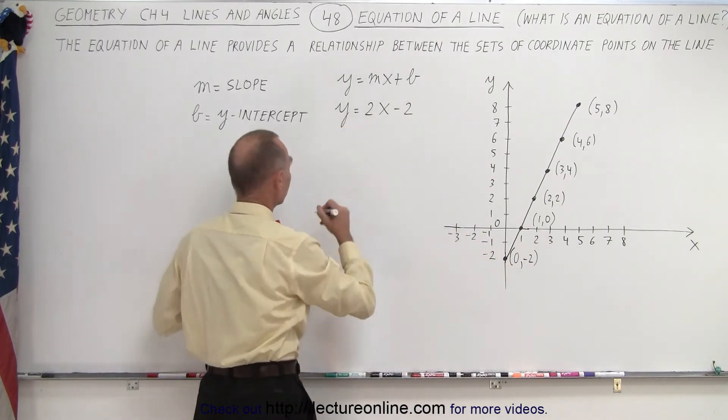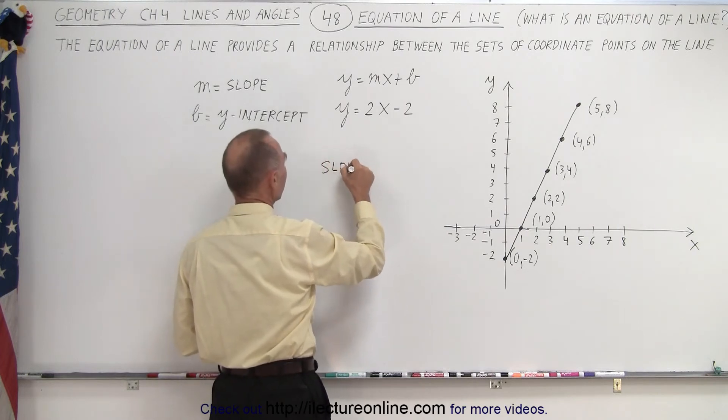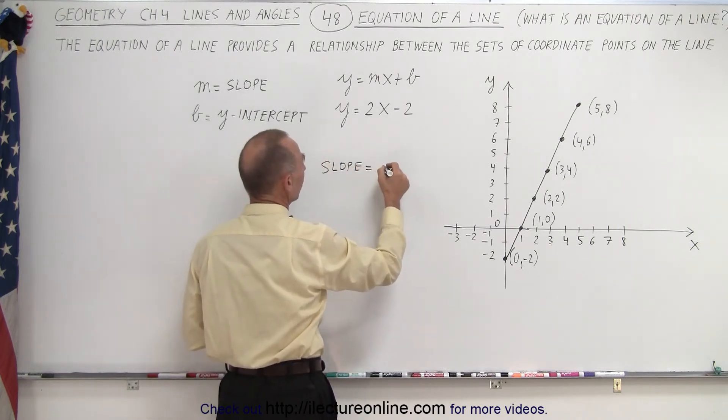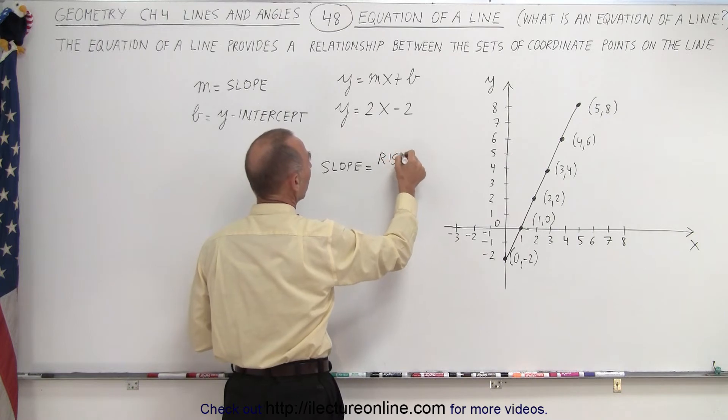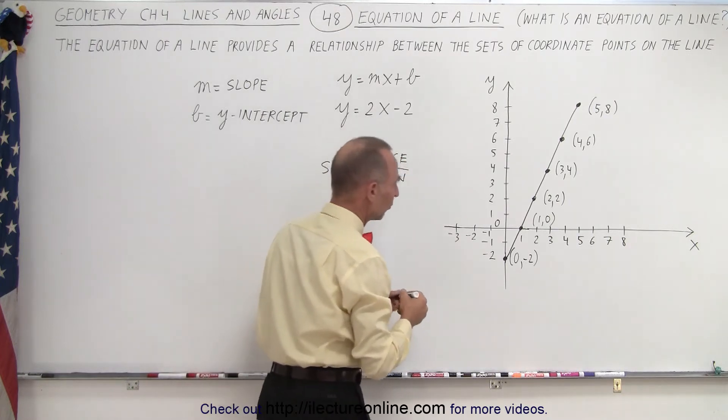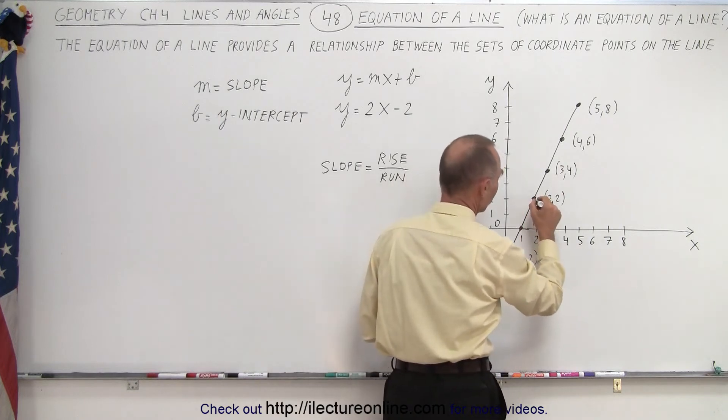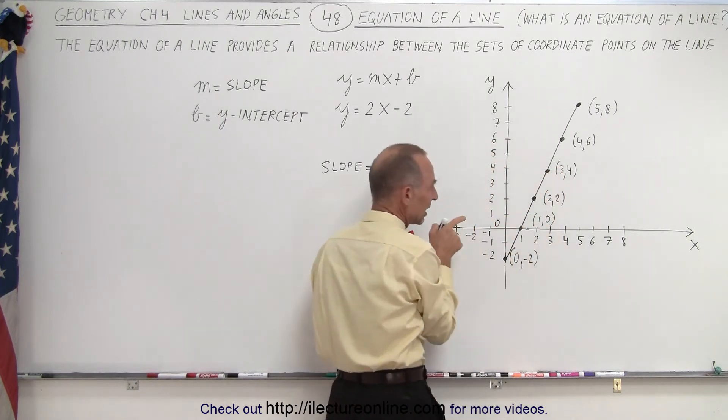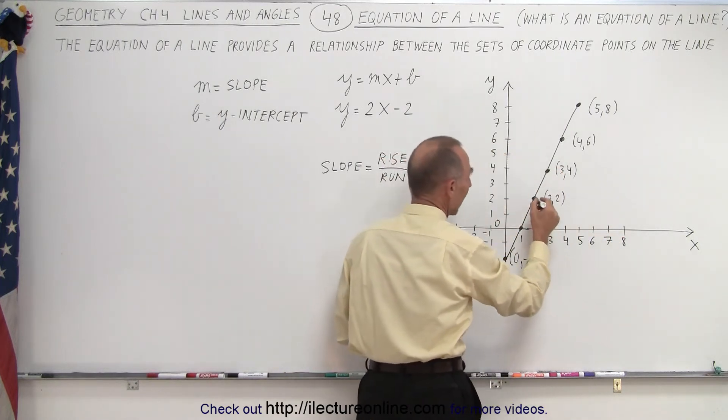The slope, by definition, we'll see that later in more detail, is the ratio of the rise over the run when we go from one point to another point. So when, for example, when we start at this point and then we go to the next point, we need to move to the right in order to make that happen.